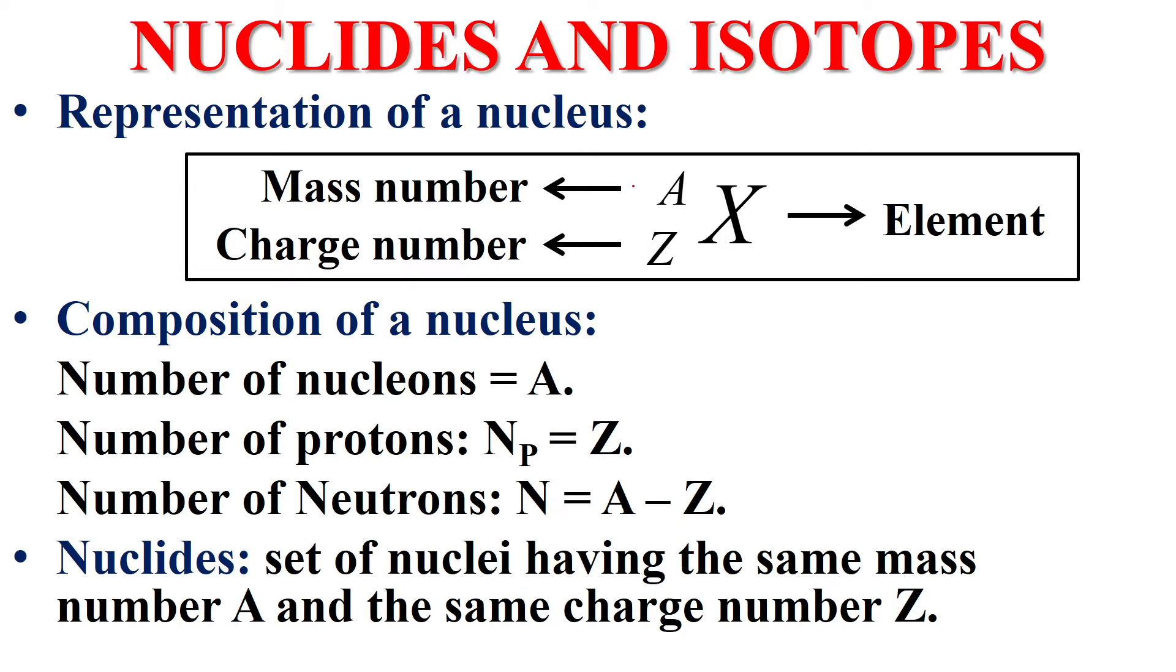The representation of a nucleus is the same as we learned about chemistry. The representation of a nucleus is the representation of an atom. The X below the number is Z and the number is A. The X represents the element.